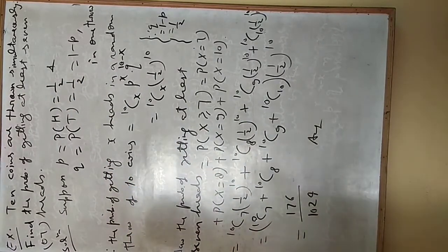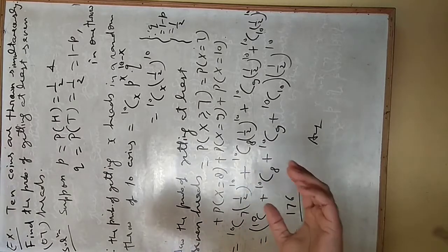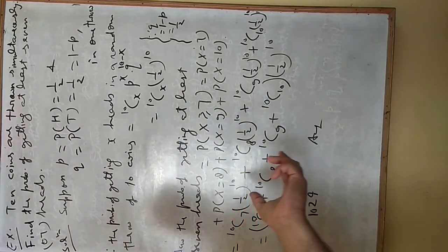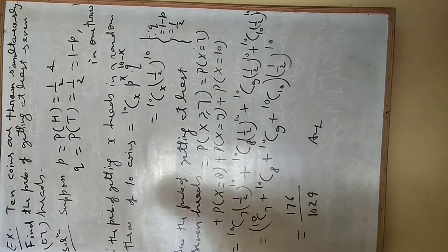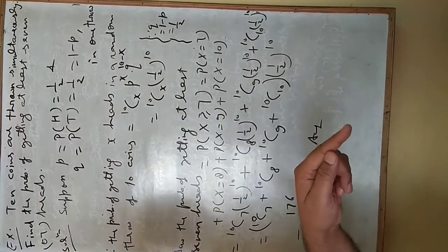Suppose we have 10 coins we threw on the ground. We will get some heads and 10 minus that number of tails. Suppose we get 5 heads, then 5 will be tail.